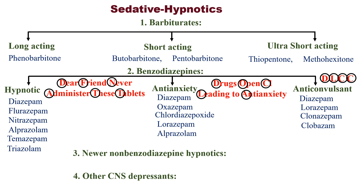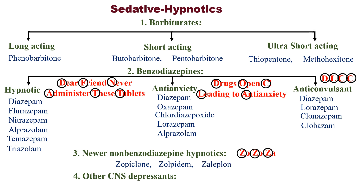In all these categories — hypnotic, anti-anxiety, and anti-convulsant — diazepam is common. Other than diazepam, you have to remember the respective mnemonics for the other drugs. The third category is non-benzodiazepine hypnotics. Here you can use the mnemonic 'zoozozo': zopiclone, zolpidem, and zaleplon.